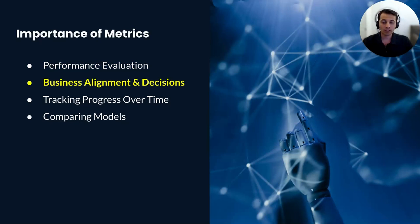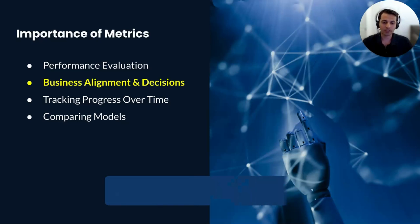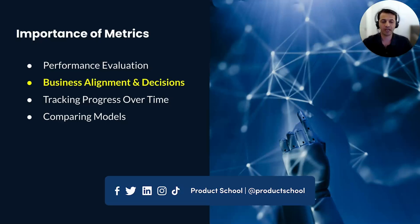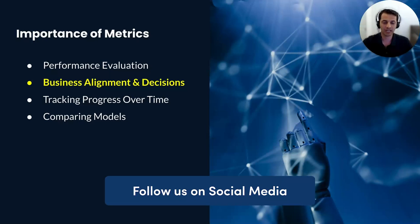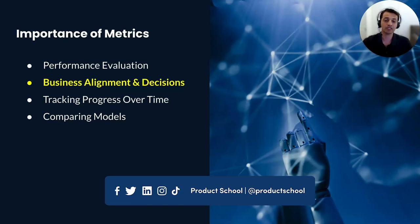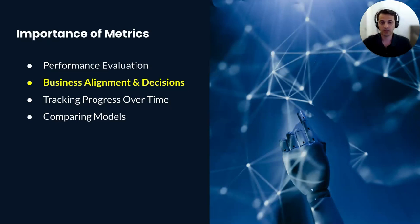Metrics connect the AI model's performance to business objectives. They help us understand how improvements in the model's accuracy or speed can lead to enhanced customer satisfaction or increased revenue. Based on the metrics, we as product leads decide to launch or sometimes sunset the product.